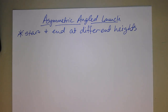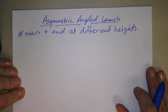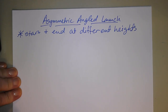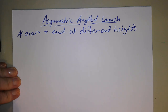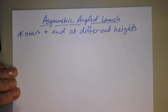Hello, so we're doing asymmetric angled launch notes today. You just did symmetric angled launch, and that's when you have things that start and end at the exact same height. When you have something that starts and ends at a different height, we call that asymmetric. And these are going to involve angles, which means more trig.